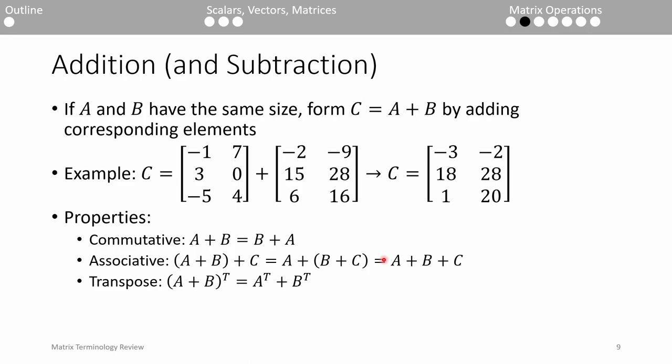To add and subtract matrices, both operands need to be the same size. If both operands are compatible, we perform vector or matrix addition by adding corresponding elements. Unsurprisingly, the resulting matrix will also be the same size as the operands.